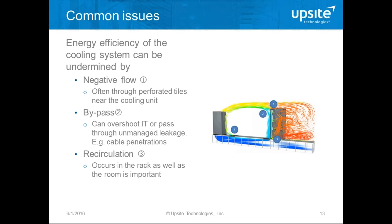Touching on what Lars discussed about bypass — we're trying to match cooling airflow between the cooling supply and the rack. But there are a few other things that can go wrong. We can get negative flow through the raised floor through a tile near the cooling unit, which is commonplace. We want to avoid hot air going back into the cold airstream — that's negative flow. We want to avoid bypass, and we also want to avoid recirculation, which is hot air going back into the cold airstream in the room.